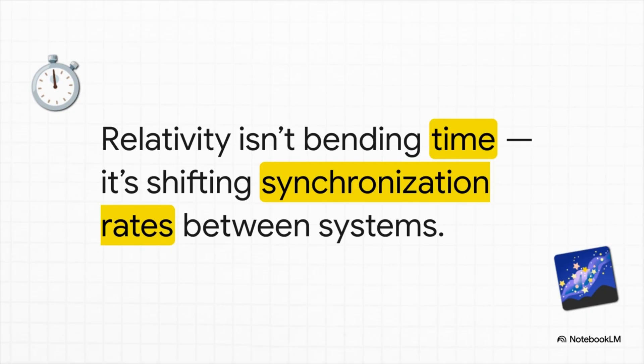And this reframes one of the biggest ideas in physics: relativity. You know how an astronaut's clock in space ticks just a little bit slower? The old explanation is that time itself is bending. But this theory says no, that's not it. It's just that the little motion loops that make up the clock are synchronizing at a slightly different rate than the motion loops of a clock back here on Earth. It's all about a change in rhythm, not some mysterious warping of a dimension called time.